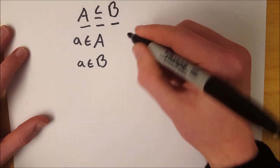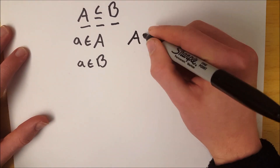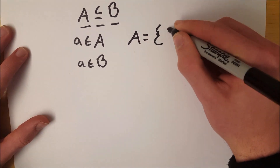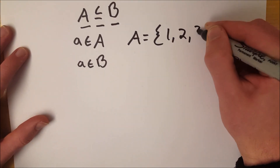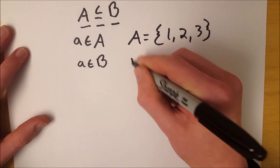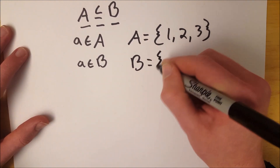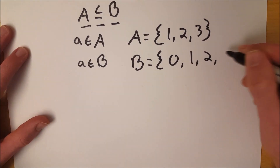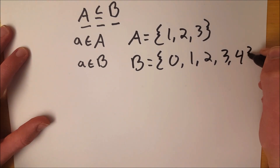Let's look at an example. Let's say that A is equal to the set containing 1, 2, and 3. And let's say that set B is equal to the set containing 0, 1, 2, 3, and 4.